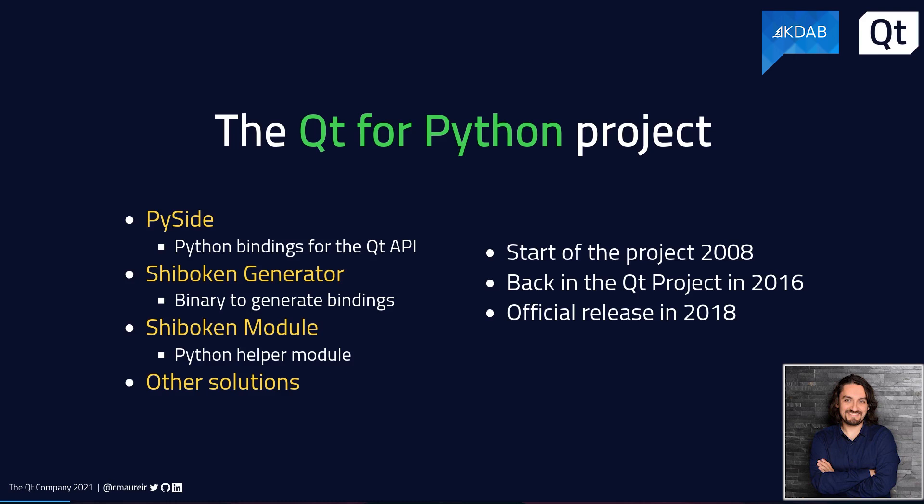A brief history: the project started around 2008 when developers began developing PySide and saw that Shiboken was a really good idea to generate bindings from it. Then later on in 2016, it was accepted as an official Qt project member, and the initial release was in 2018 for Qt 5.12.